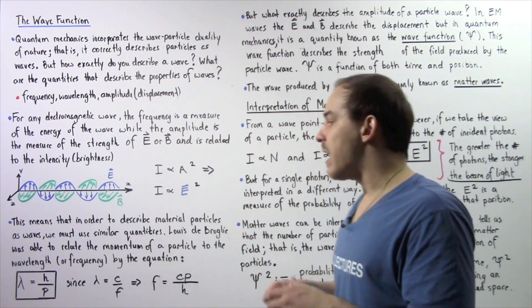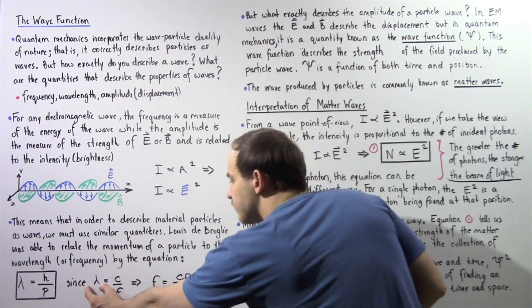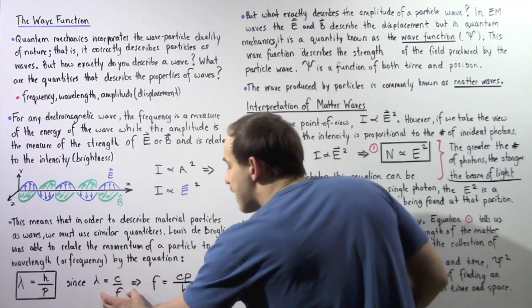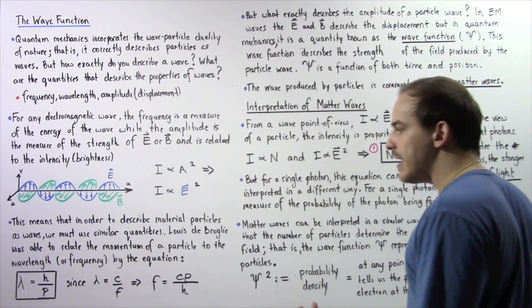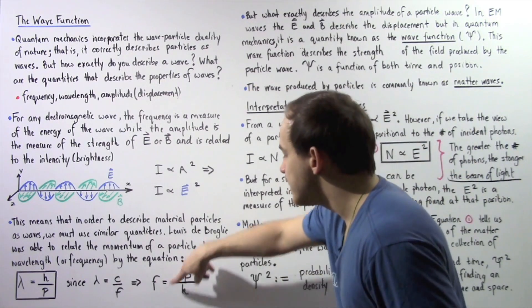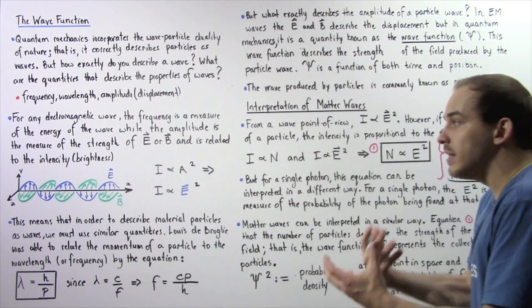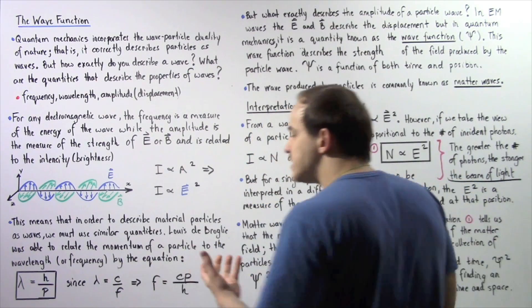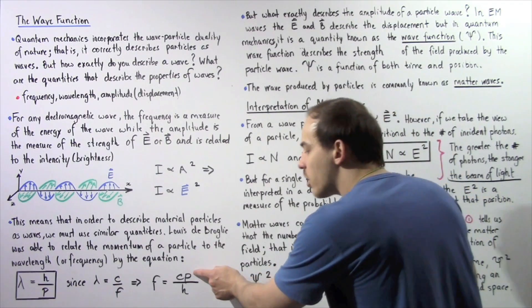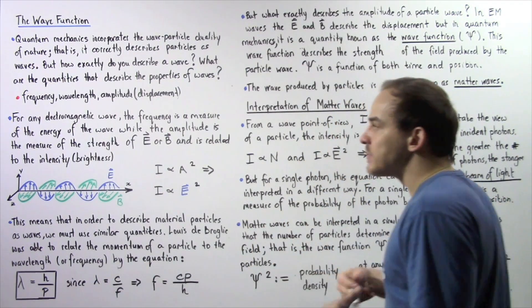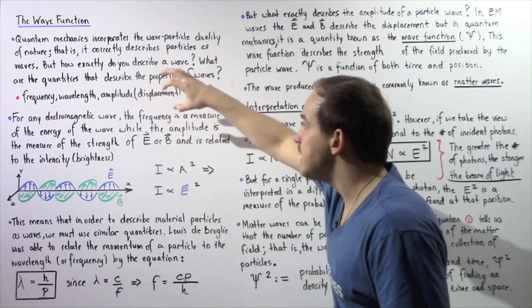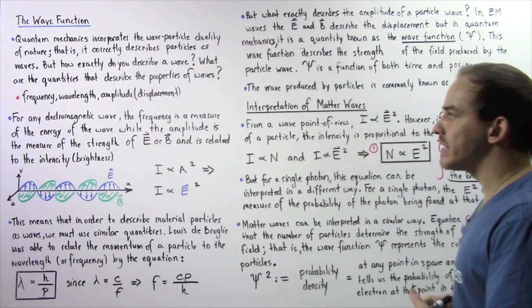Because the wavelength is equal to c, the speed of light in a vacuum, divided by f, the frequency of oscillation of the wave, we can rewrite the equation in terms of f, c, h, and p. This builds a relationship between the frequency of the particle wave and the particle's momentum — analogous to relating the energy of a photon to the frequency or wavelength of an electromagnetic wave.